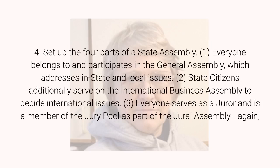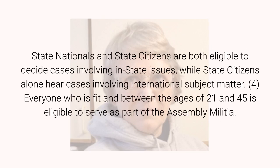4. Set up the four parts of a state assembly. 1. Everyone belongs to and participates in the general assembly, which addresses in-state and local issues. 2. State citizens additionally serve on the international business assembly to decide international issues. 3. Everyone serves as a juror and as a member of the jury pool as part of the jural assembly. State nationals and state citizens are both eligible to decide cases involving in-state issues, while state citizens alone hear cases involving international subject matter. 4. Everyone who is fit and between the ages of 21 and 45 is eligible to serve as part of the assembly militia.